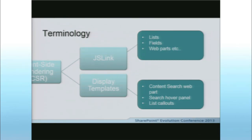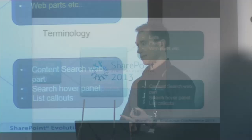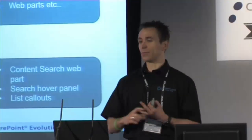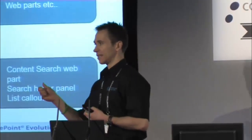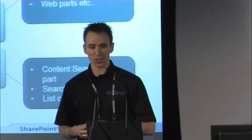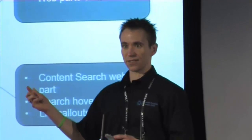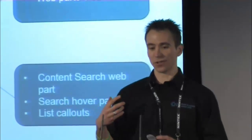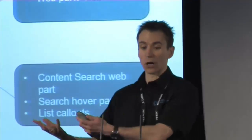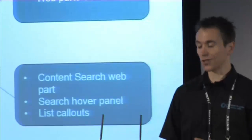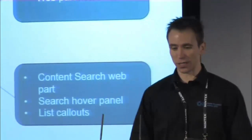The four key scenarios we're looking at are: changing the user interface of a SharePoint list; changing the user interface of a SharePoint field — maybe doing some conditional formatting or specific behavior based on conditions; the content search web part, where we need HTML output in a certain way; and finally the search hover panel, which is really cool — you can do quite a lot with that thing.